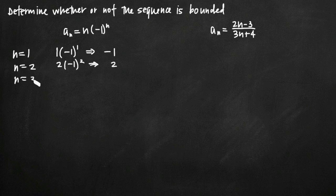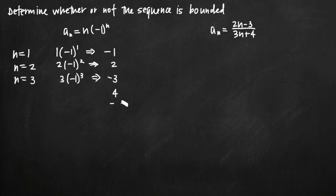Plugging in n equals 3, we get 3 times negative 1 to the third, which gives us negative 3. Continuing, we get 4, negative 5, 6, and a pattern emerges. All of our odd values are negative, and interspersed between them are positive even values: 2, 4, and 6 — all positive numbers.